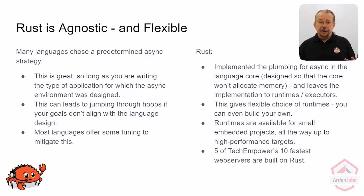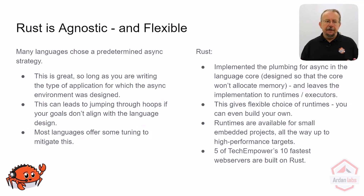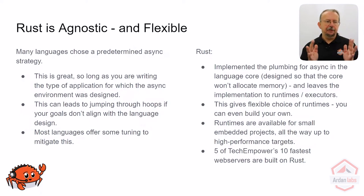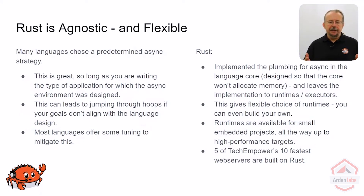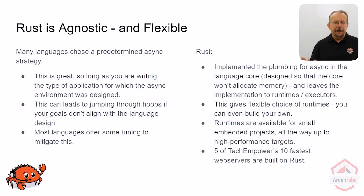Rust and also C++ made the decision to implement just the plumbing for async. They designed it so that async doesn't impose a requirement on allocating memory, meaning it can be scaled all the way down to tiny little embedded devices. The actual implementation of the two parts of the runtime is left up to a package that will implement it for you.